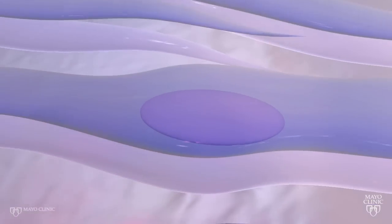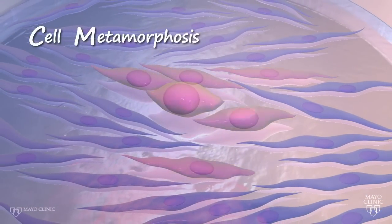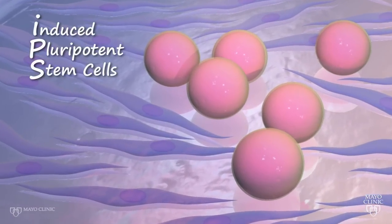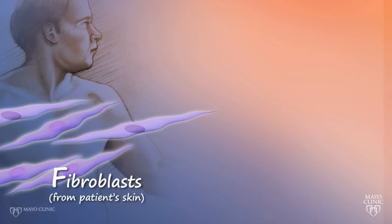By undergoing this dramatic metamorphosis, the cell even begins to look like a stem cell. Essentially this process sends an ordinary cell back in time to look, feel, and behave like a pluripotent stem cell.